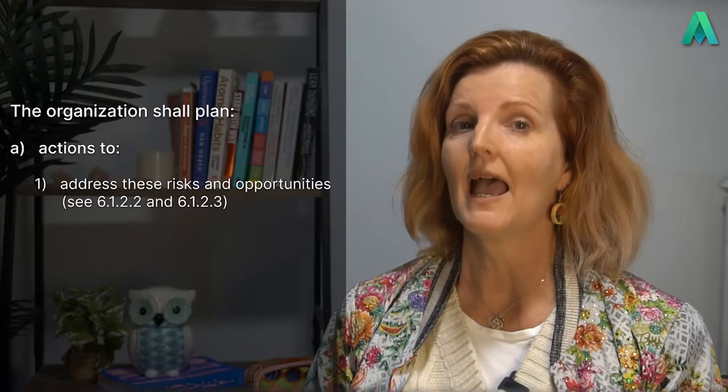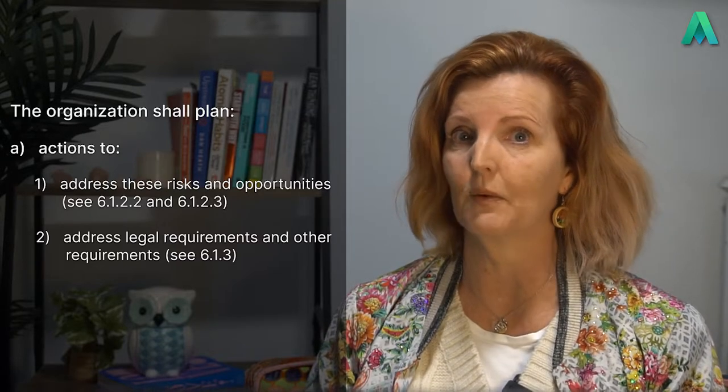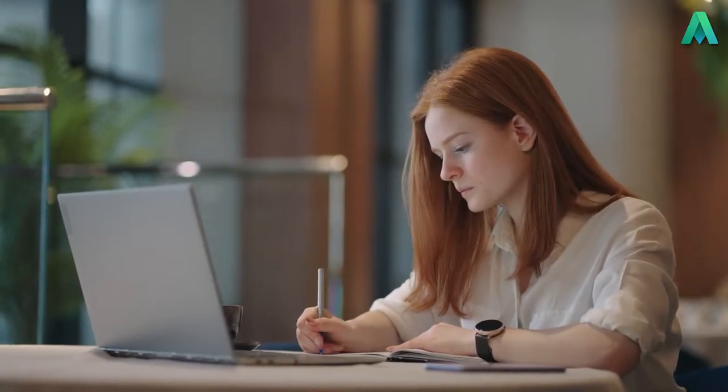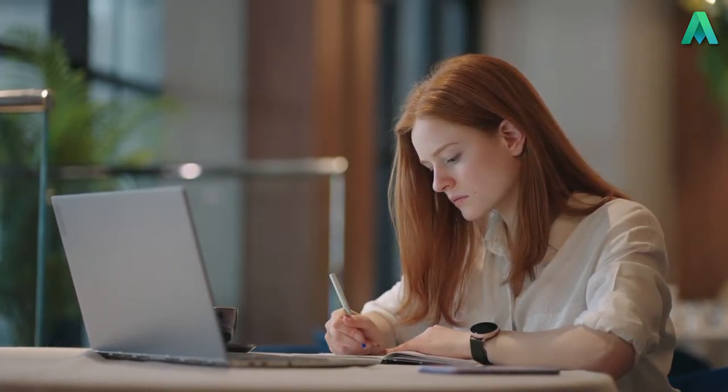Clause 6.1.4 starts off with stating the organisation shall plan actions to address: risks and opportunities (see clause 6.1.2.2 and 6.1.2.3); legal requirements and other requirements, which is clause 6.1.3; and finally prepare for and respond to emergency situations, which is clause 8.2. Basically, what they're saying is that there would be actions required as a result of meeting the requirements of clauses 6.1.2.2 — assessment of OH&S risks and other risks — 6.1.2.3 — assessment of OH&S opportunities — 6.1.3 — determination of legal requirements and other requirements — and 8.2, emergency preparedness and response.